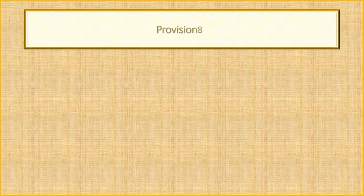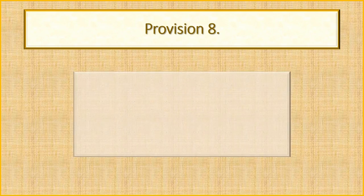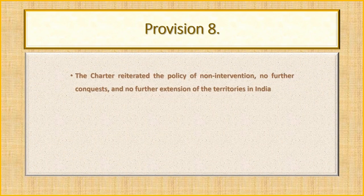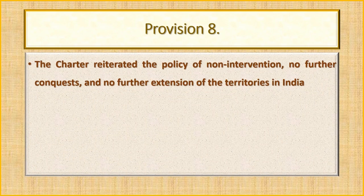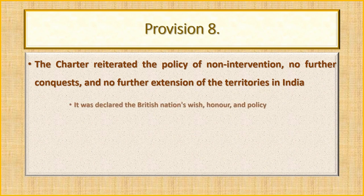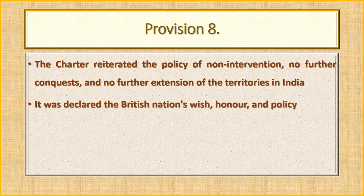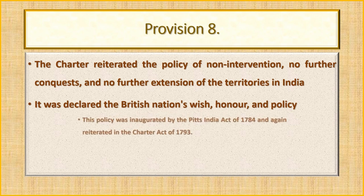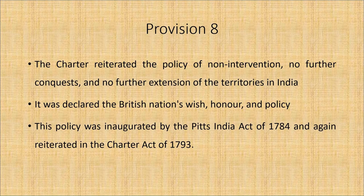In Provision 8, the charter reiterated the policy of non-intervention — no further conquests and no further extension of territories in India. It was declared the British nation's wish, honor, and policy. This policy was inaugurated by the Pitt's India Act of 1784 and again reiterated in the Charter Act of 1793.